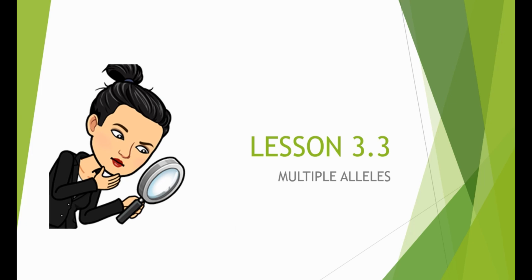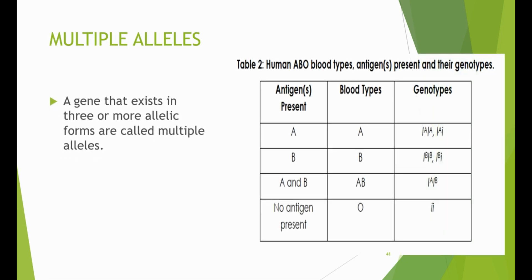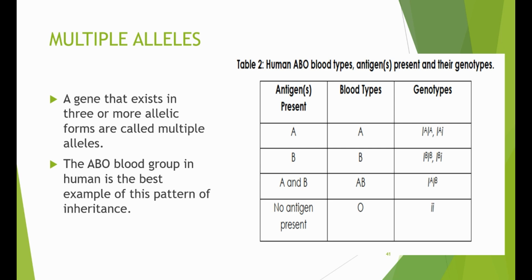Lesson 3.3: Multiple Alleles. A gene that exists in three or more allelic forms is called multiple alleles. The ABO blood group in humans is the best example of this pattern of inheritance. There are three alleles responsible for this blood system: A, B, and I. The absence or presence of antigens in the blood determines a person's blood type. There are only two antigens, A and B. Individuals with blood type O do not have antigens in their blood because allele I does not code for an antigen.